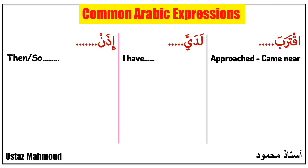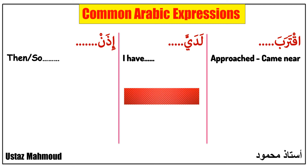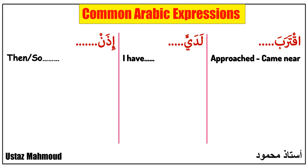Assalamu alaikum. Let's learn some common Arabic expressions we use in our daily life. We start first with 'Iqtaraba' — it's a verb in past form, it means 'approached' or 'came near.' Let's see some Arabic phrases for this verb.